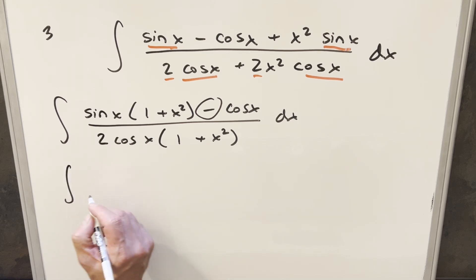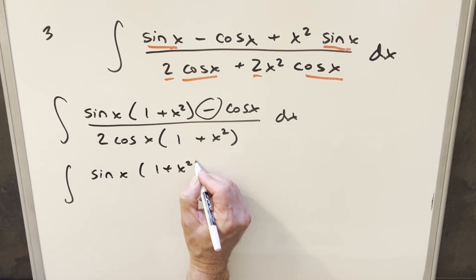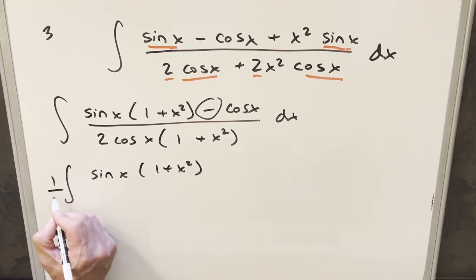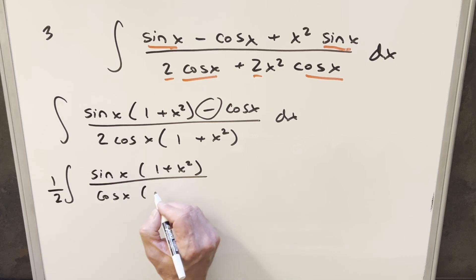And I'll let you do it as two integrals. So the first one is going to be sine x, 1 plus x squared. For the 2, let's bring that up front as a 1 half. And then this is going to become cos x, 1 plus x squared.